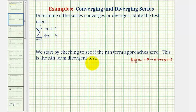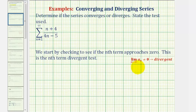The nth term divergent test states that if the limit as n approaches infinity of a sub n doesn't equal zero, then the series is divergent, where a sub n is the formula used to determine the terms in the series. Now one thing to notice here is that if this limit does equal zero, it does not mean the series is convergent. If this limit is zero, the series can be convergent or divergent, so then we'll use another test. But if this limit doesn't equal zero, we can conclude the series is divergent.